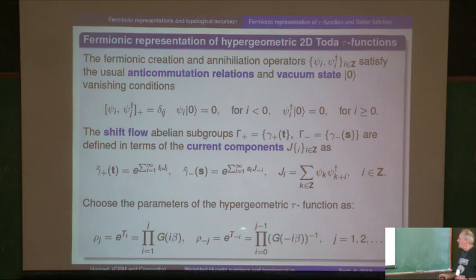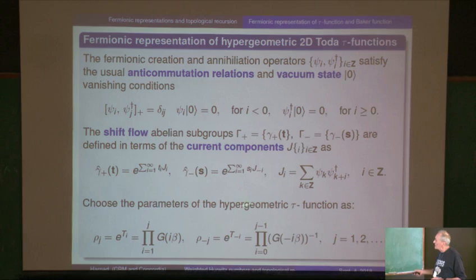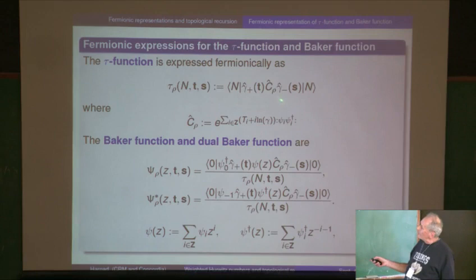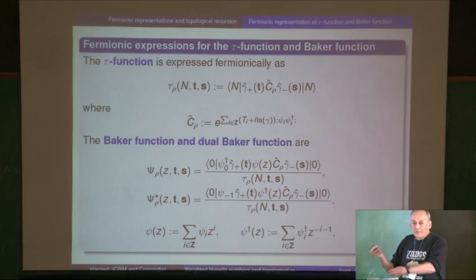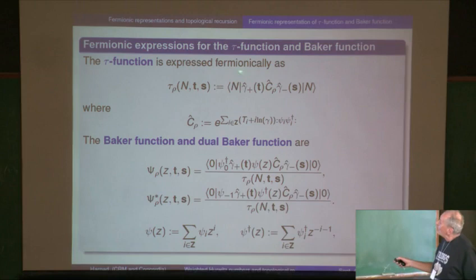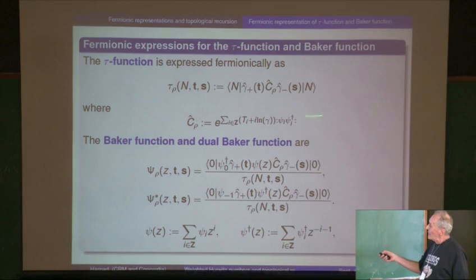Here we have two abelian groups which act fermionically by this Clifford representation. These are called the currents — they're bilinears in the creation and annihilation operators — and the fermionic representation of a 2D Toda tau function is, in general: you put any group element here, where the group element could be the exponential of any bilinear in the creation and annihilation operators, with one abelian flow and another abelian flow.